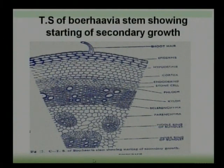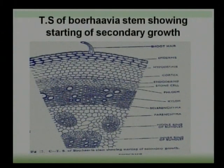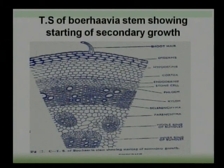The inner ring has just two large-sized vascular bundles. These bundles are also conjoint, collateral, and open type. Compared to the middle ring, the inner bundles are very large in size and both bundles are facing towards each other. They also produce a very small amount of secondary xylem and secondary phloem. This covers the anatomical features of the Borhevia stem showing the starting of secondary growth.